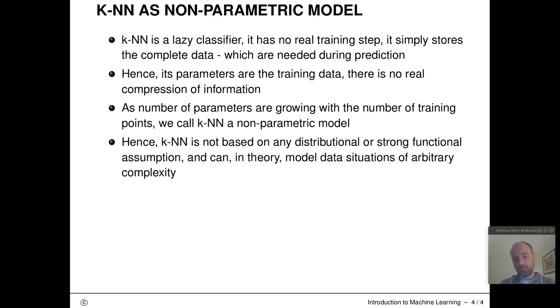That's actually the defining property of a non-parametric model that the number of parameters is allowed to increase if I increase the size of my training data set. And because of this non-parametric property, also because KNN is not based on any distributional or strong functional assumption, it can, in theory, model data situations of arbitrary complexity.